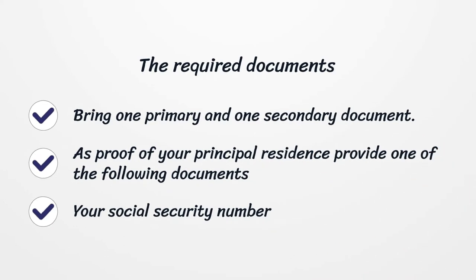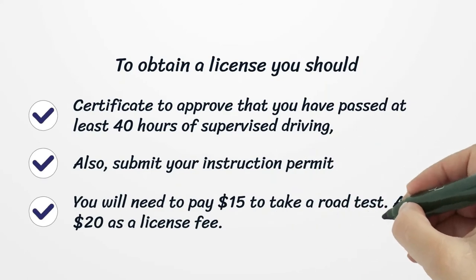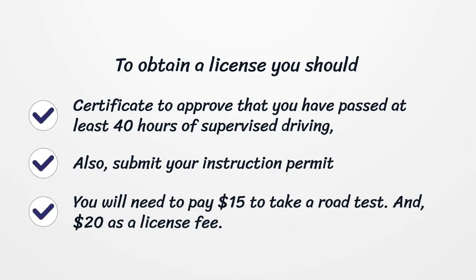The Required Documents: Bring one primary and one secondary document. As proof of your principal residence, provide one of the following documents, including your social security number. To obtain a license, you should submit a certificate to prove that you have passed at least 40 hours of supervised driving. Also, submit your instruction permit. You will need to pay $15 to take a road test and $20 as a license fee.